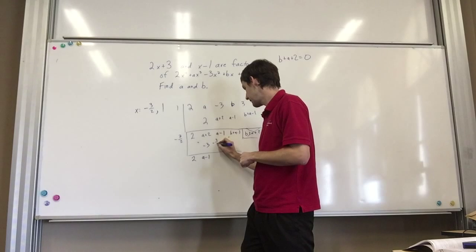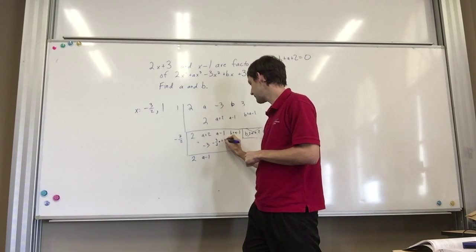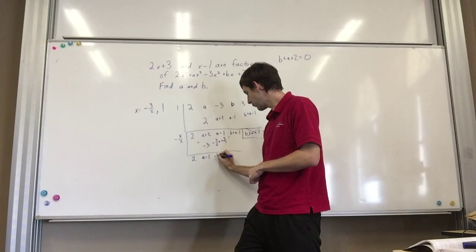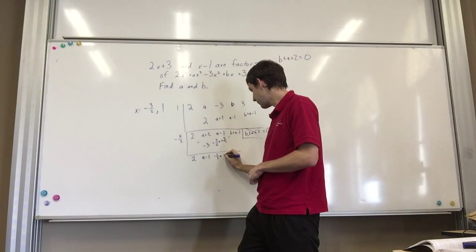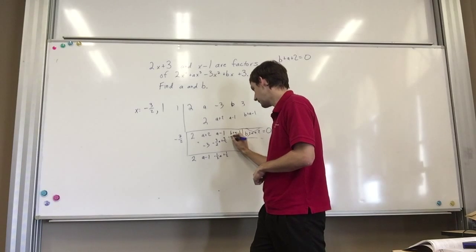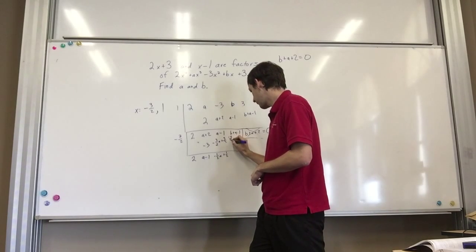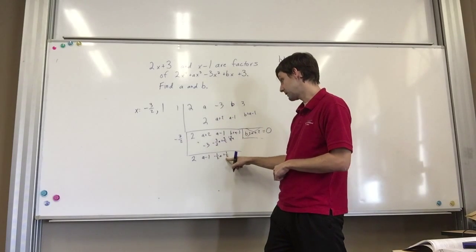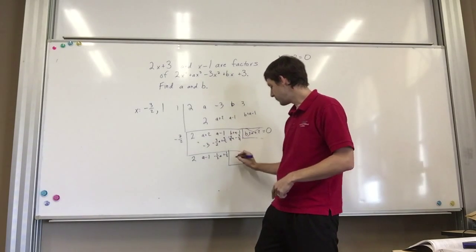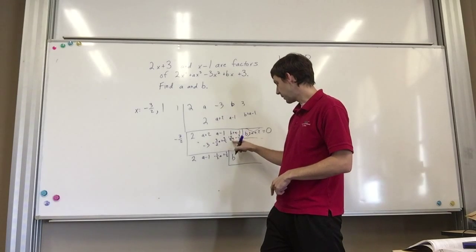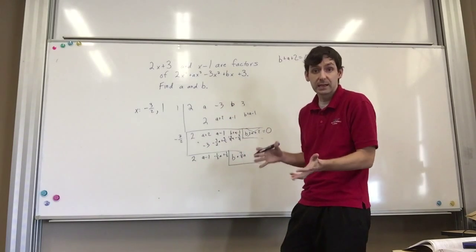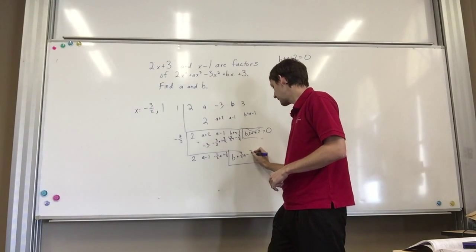Negative 3 halves times that. Now, we're going to get a little bit more nasty, but, you know what, we can deal with it anyway. Negative 3 halves a plus 3 halves because negative times negative would give me a positive. When I put those together, I'm going to get a negative 1 half a, and then a plus 1 half. And then I multiply that by negative 3 halves. And negative 3 halves times negative 1 half is going to give me 3 over 4 a. And then negative 3 halves times positive 1 half will give me a negative 3 over 4.